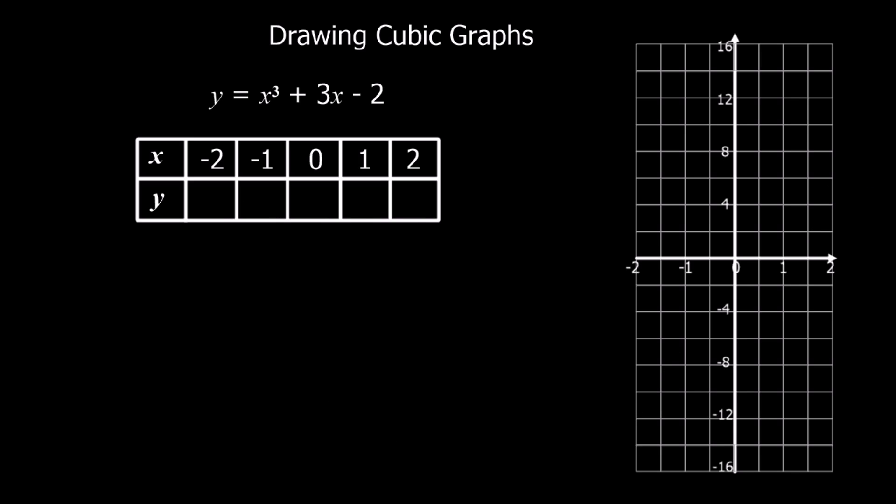If you can try this one, pause the video, give it a go. Okay, so if you use the calculator, we've got 2 cubed plus 3 times 2, minus 2. 2 cubed is 8, plus 6 is 14, takeaway 2 is 12.